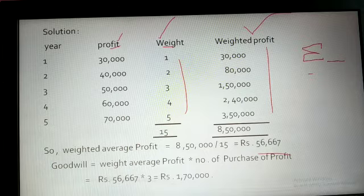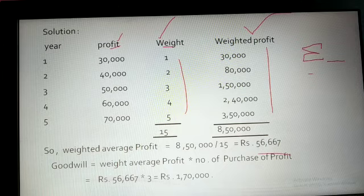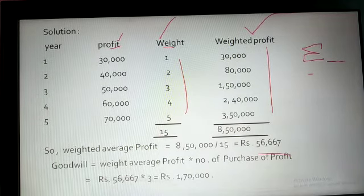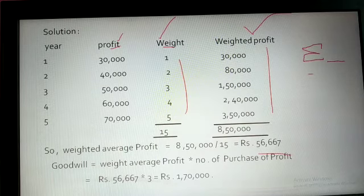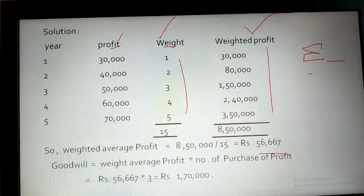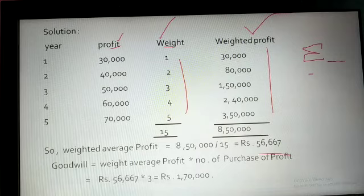This numerical was solved using the weighted average method to calculate goodwill. Under the average profit method, we solved two numericals — one with simple average and one with weighted average. Now you have to solve each and every question from your NCERT related to weighted average method. The next method of calculating goodwill is the super profit basis — wait for my next video, subscribe the channel and press the bell icon. Thank you.